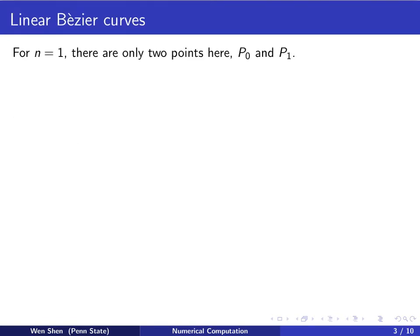For the simplest case, when n equals 1, there are only two points, P0 and P1. This is called linear Bézier curves. The Bézier curve is simply a straight line that connects P0 and P1.